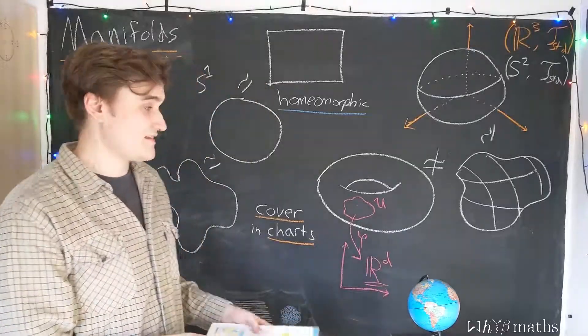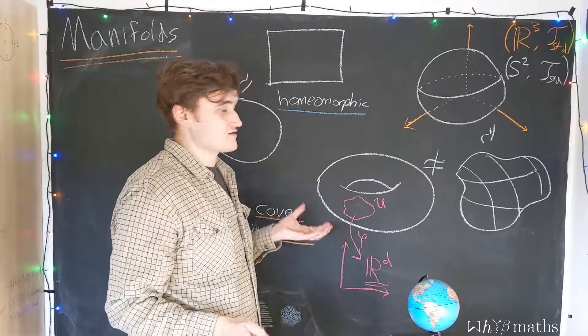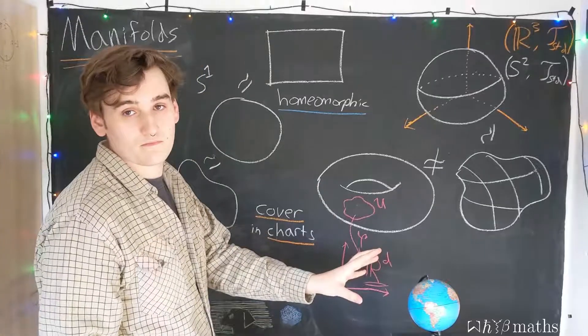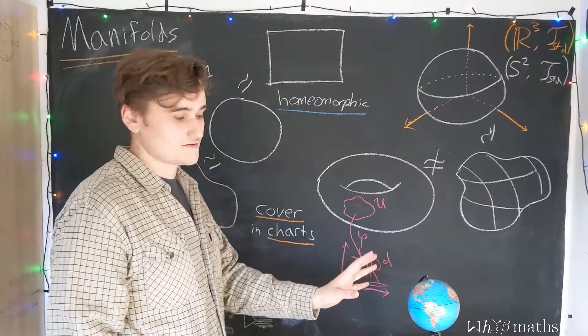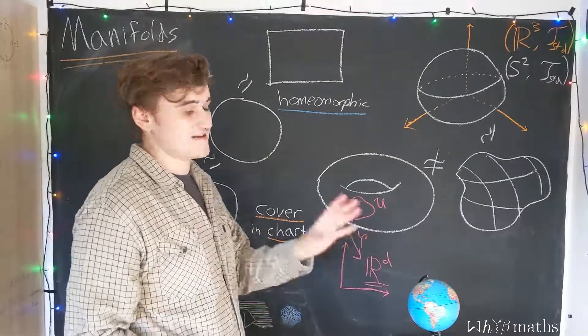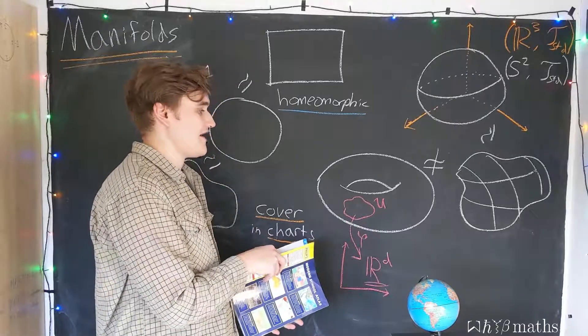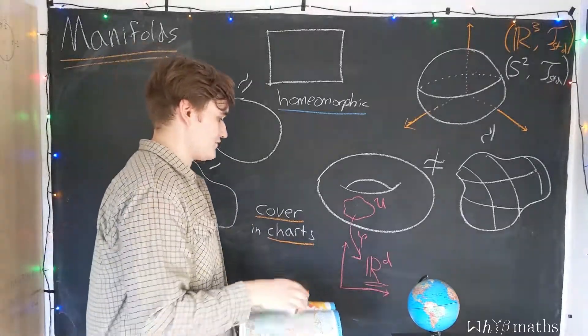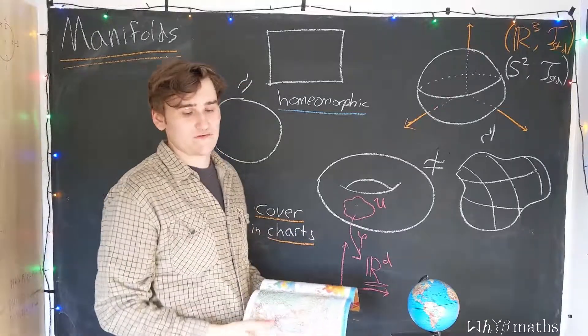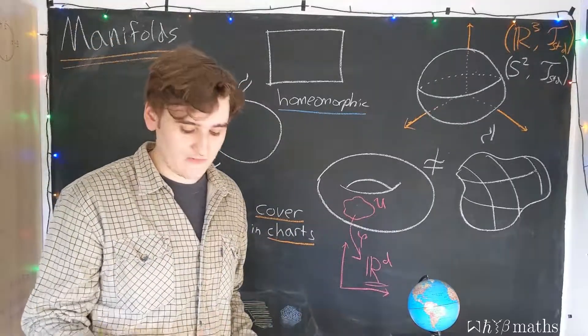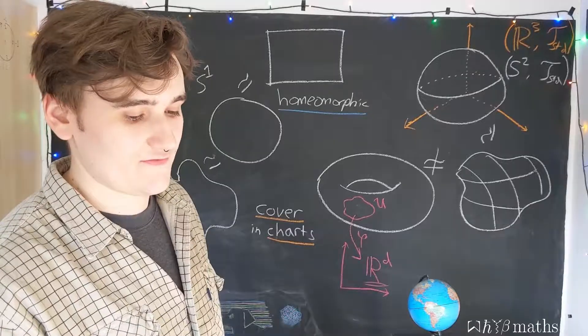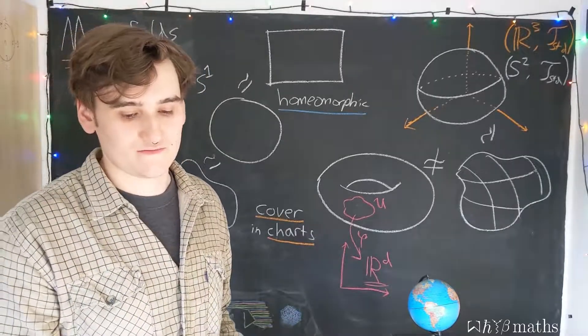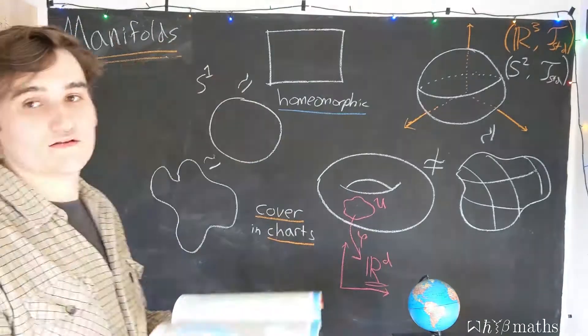So, this is the essential idea of what we do when we construct a manifold. We have some abstract topological space. It will just be a set of elements. And then we map that set of elements into a subset of the real numbers, which just allows us to talk about the elements of the manifold concretely, in terms of lists of numbers or coordinates.